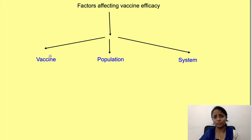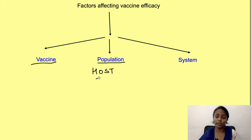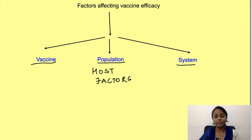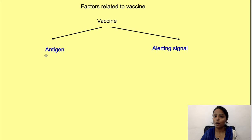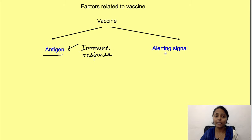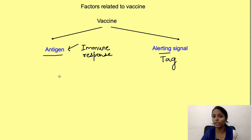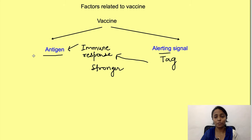There are various factors — some can be related to the vaccine itself, some can be related to the population in which the vaccine is being administered, known as host factors, and some can be related to the system. Any vaccine has two components: one is the antigen which we want to target, against which the immune response develops, and the second is a danger signal — a tag which alerts the immune system that a foreign antigen has entered the body, producing a much better immune response.